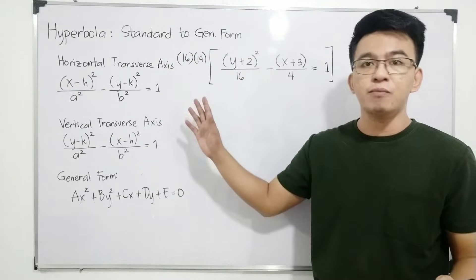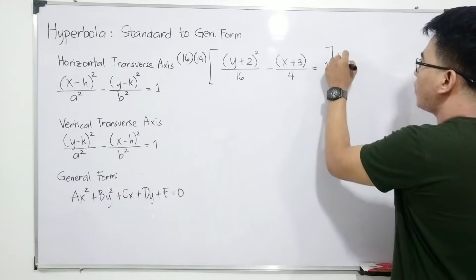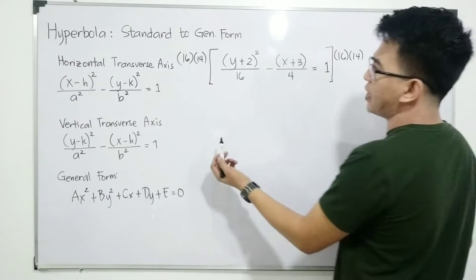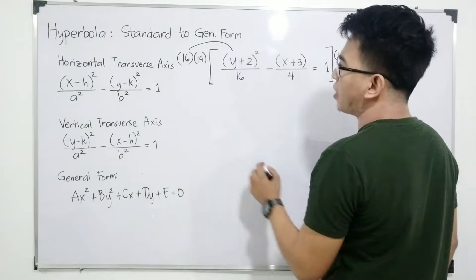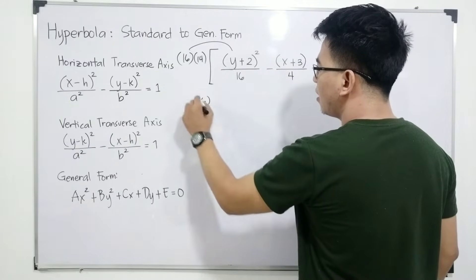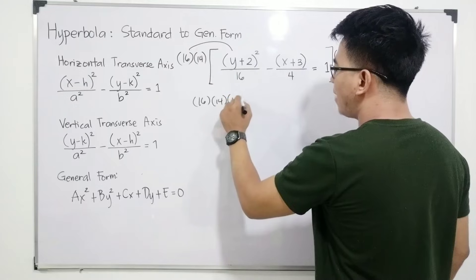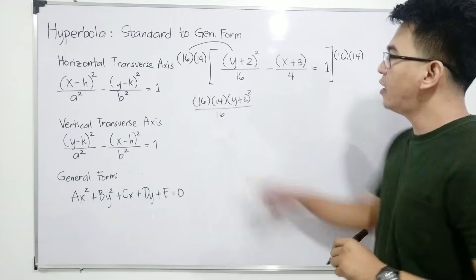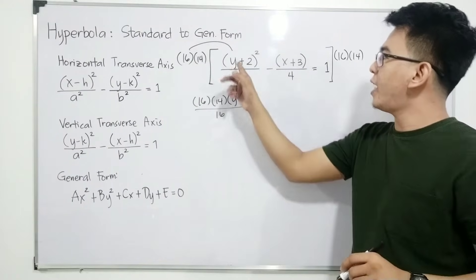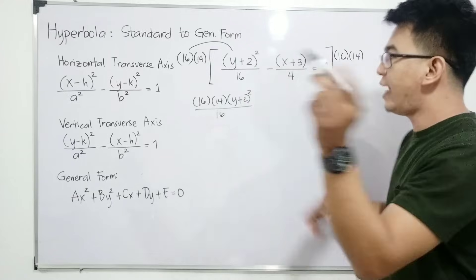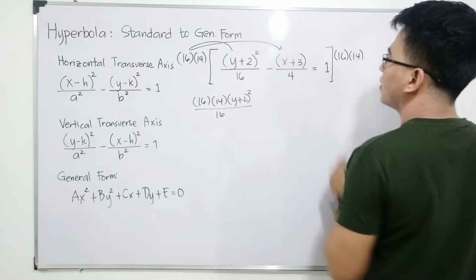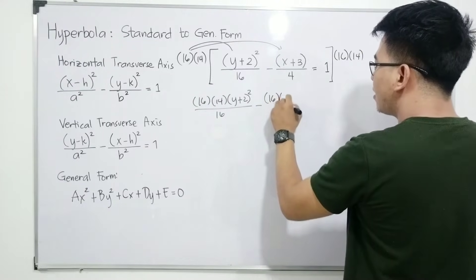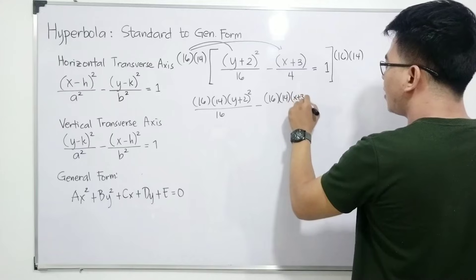We multiply the whole equation by 16 times 4. By the distributive property, this becomes: 16 times 4 times (y plus 2) squared over 16, minus 16 times 4 times (x plus 3) squared over 4, equals 16 times 4 times 1.